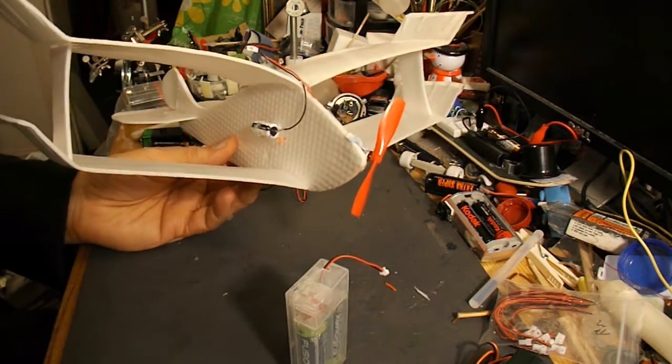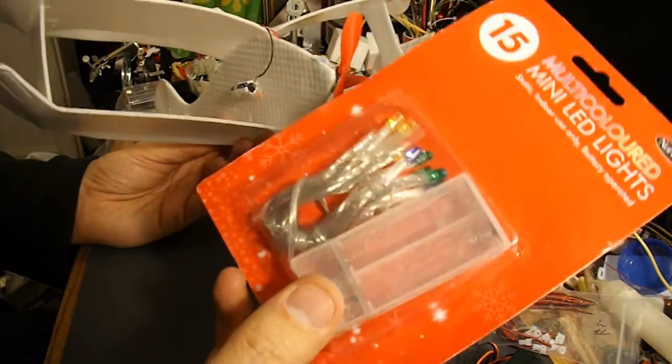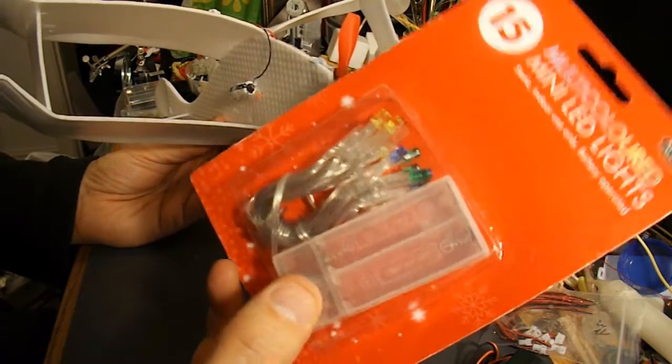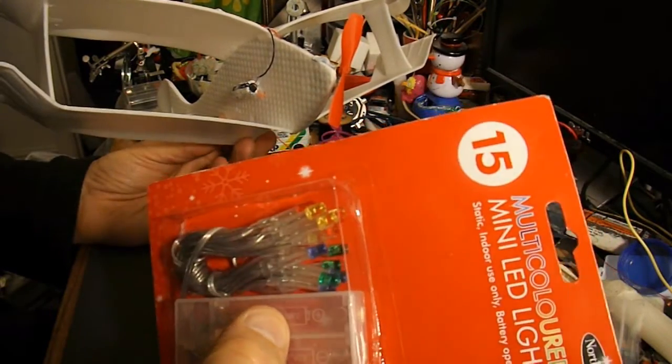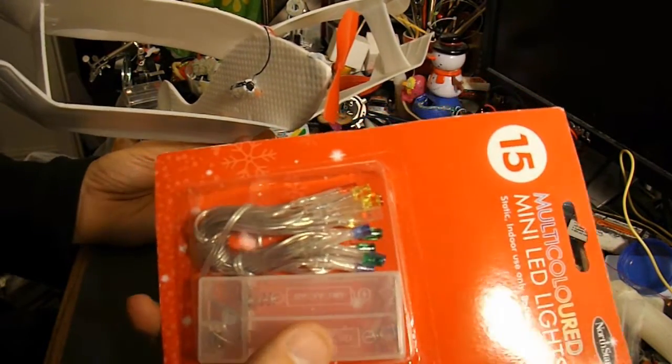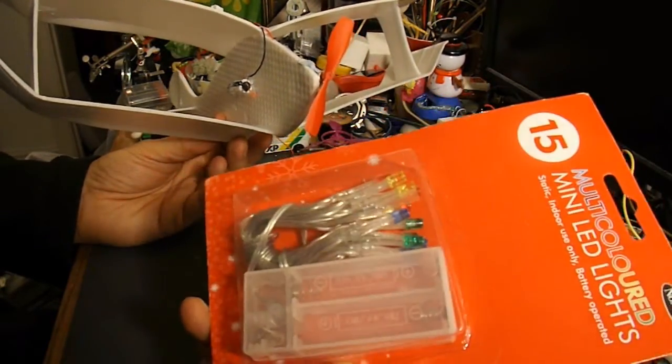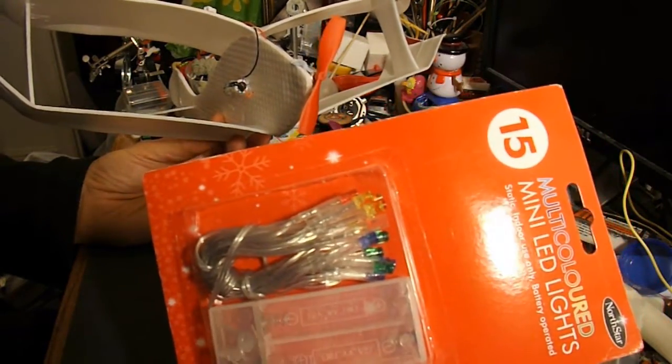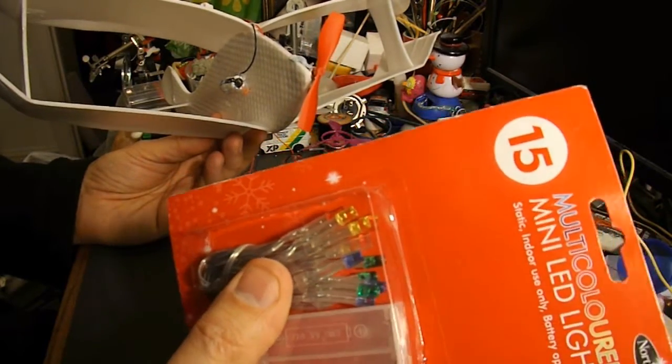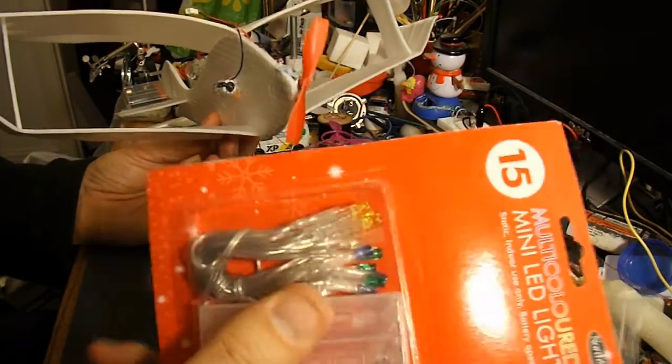You get an ordinary 2AA battery pack from somewhere. And as I say, these mini LED lights is a good source of them. You could actually buy one from an electrical shop, but I get these from Poundland. So that's a pound for the battery pack, and I also get a handy set of LEDs to play with for other projects.